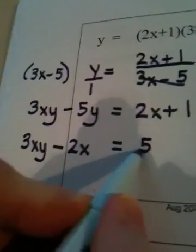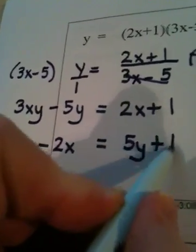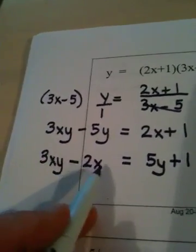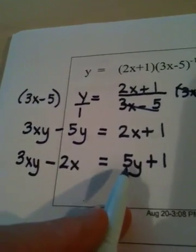And the 1 didn't move so it keeps the same sign. So what I basically did is I got all my terms that contained x on the left, my terms that didn't contain x on the right.